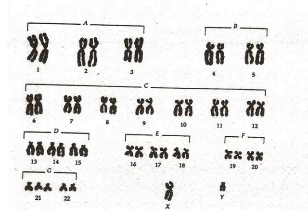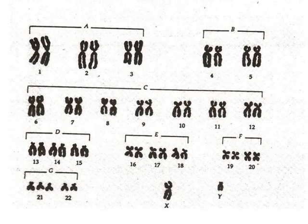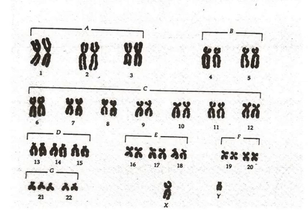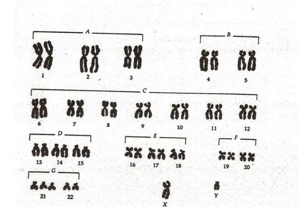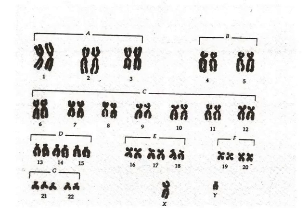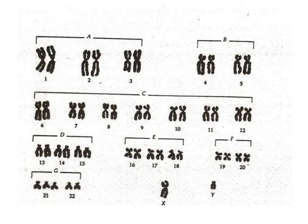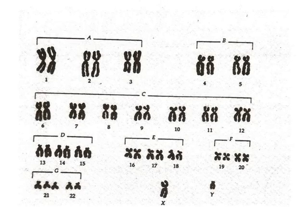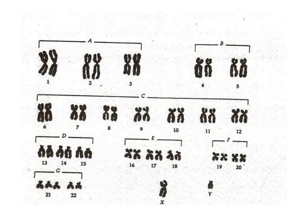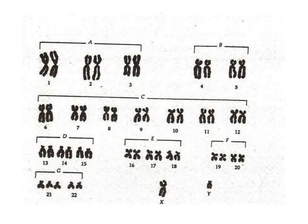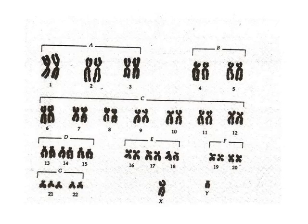Do you notice anything unusual about this karyotype? If you said chromosome pair 21, you are correct. This person has a disorder known as Trisomy 21 or Down syndrome. Down syndrome is a genetic disorder in which a person inherits one extra chromosome. Instead of the normal pair of chromosomes, they have three chromosome number 21. This disorder is characterized by moderate mental disability, characteristic facial features, and even heart defects. A lot can be determined just by looking at the appearance of a person's chromosomes in a karyotype.